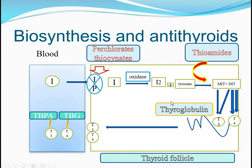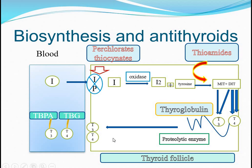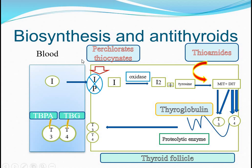When the body needs T3 and T4, under the action of proteolytic enzymes, T3 and T4 are released. When T3 and T4 levels are low in the blood, the hypothalamus-pituitary axis responds through positive and negative feedback mechanisms. Thyroid stimulating hormone (TSH) from the anterior pituitary comes and stimulates the thyroid follicles, promoting synthesis of T3 and T4.